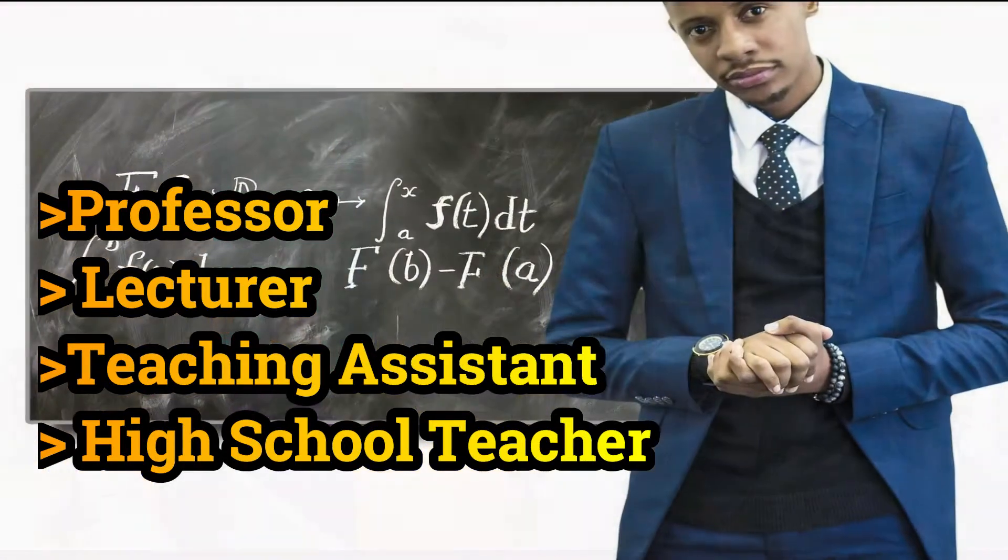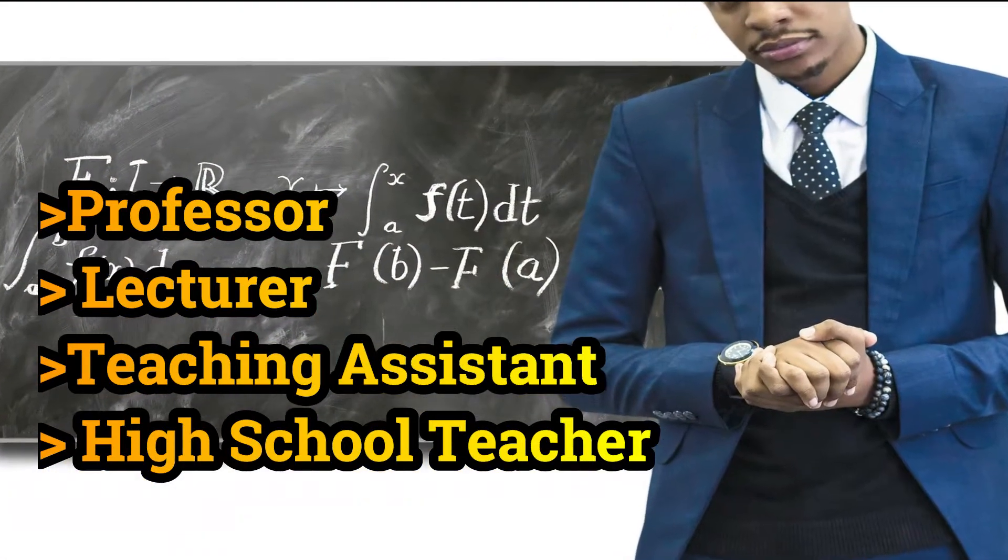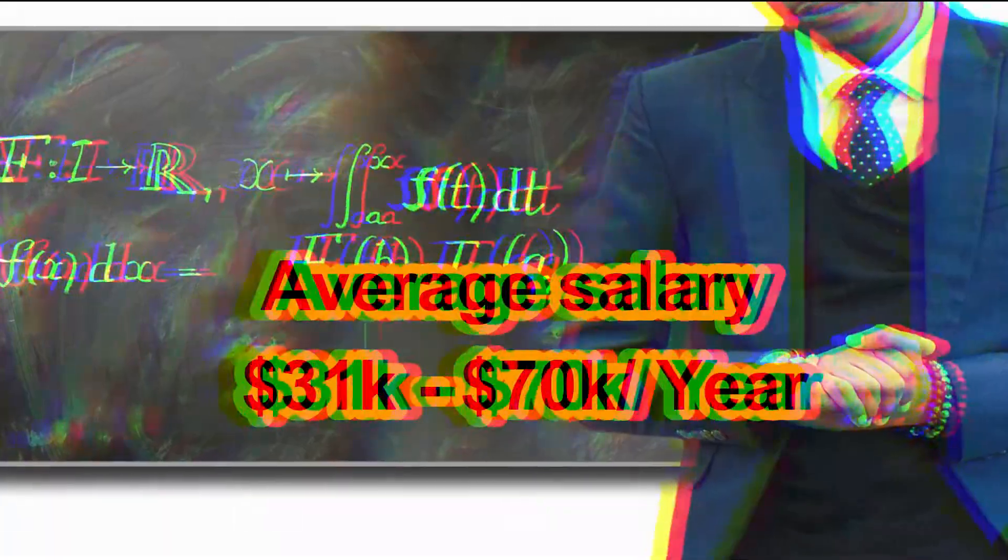Number five, you can work in educational institutes as a professor, lecturer, teaching assistant, or secondary school teacher in universities, colleges, and schools. Average salary is around $31,000 to $70,000 per year.